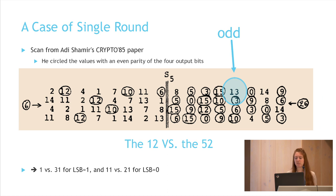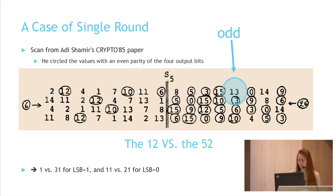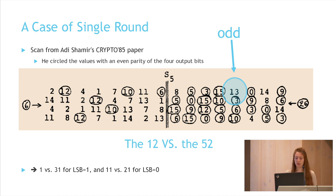We illustrate this with a scan from Adi Shamir's crypto paper. On the left side of a vertical line appear all outputs where the second bit of input is 0, and on the right side all outputs where the second bit of input is 1. Shamir circled the values with even parity of the four output bits. The blue cases satisfy the approximation, and we can see that only one of the blue cases is odd — so conditioning on the odd cases where LSB equals 1 gives one value against 31.